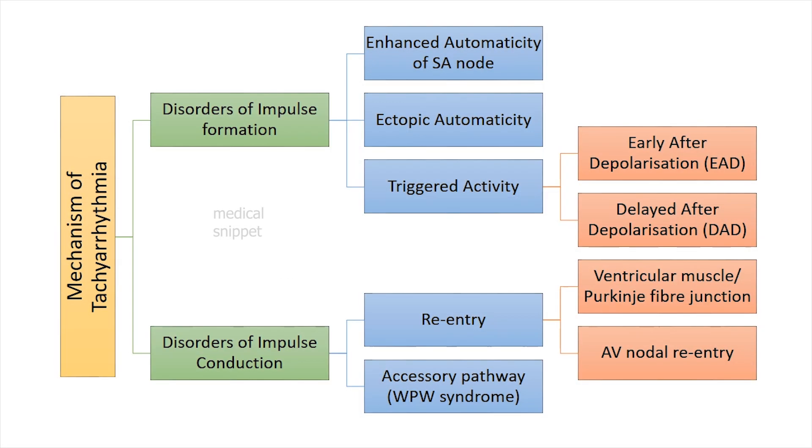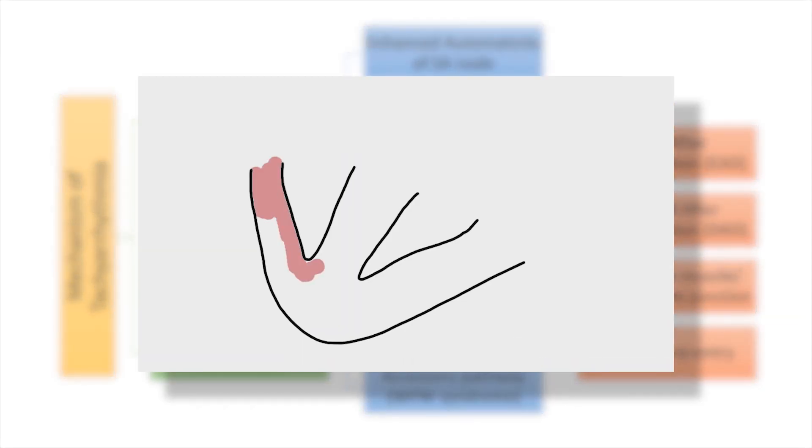Let's see about re-entry, a mechanism responsible for most of the tachyarrhythmias. In normal myocardium, the Purkinje fibers divide into the ventricular wall. The impulse from the Purkinje fibers excite the myocardium, and the impulses collide and extinguish each other.